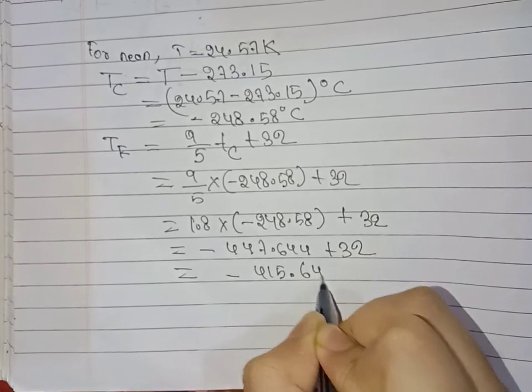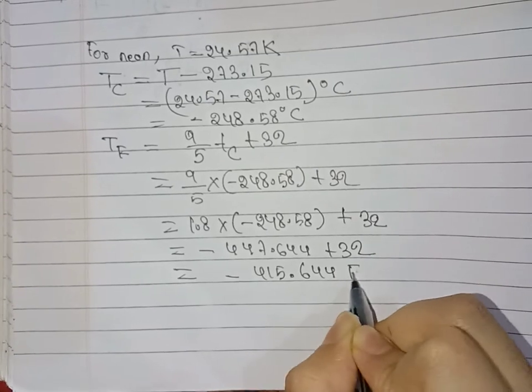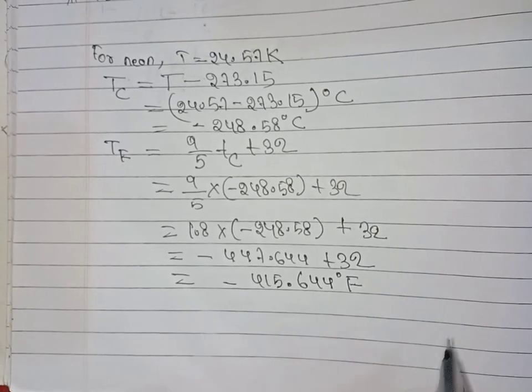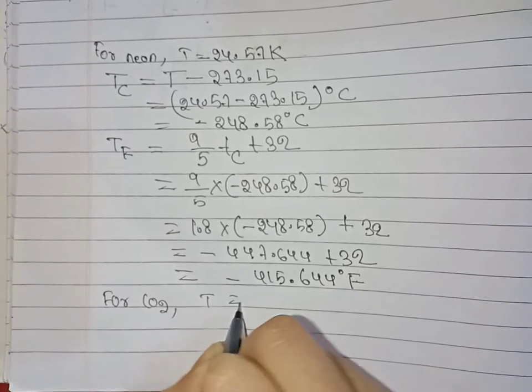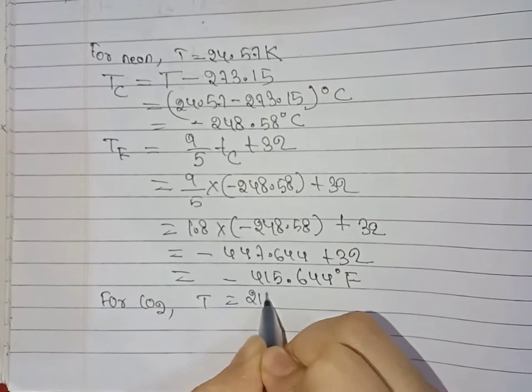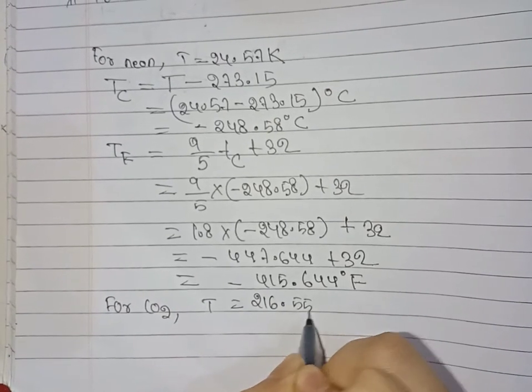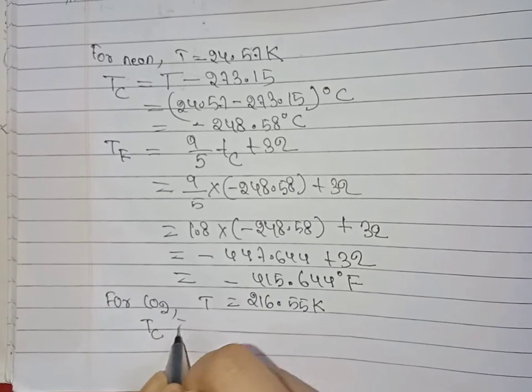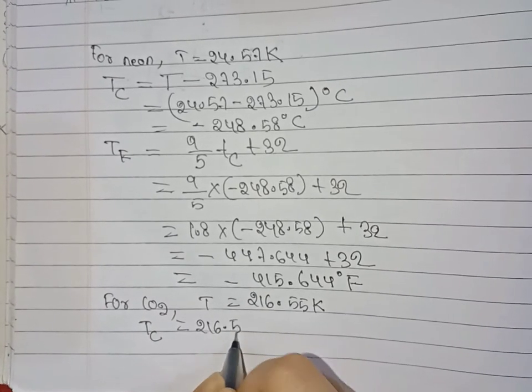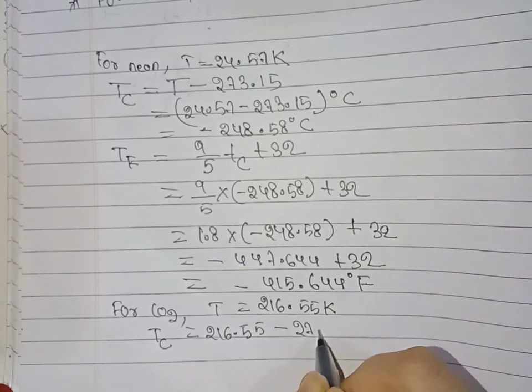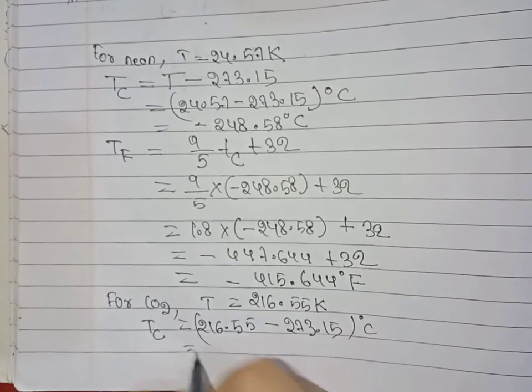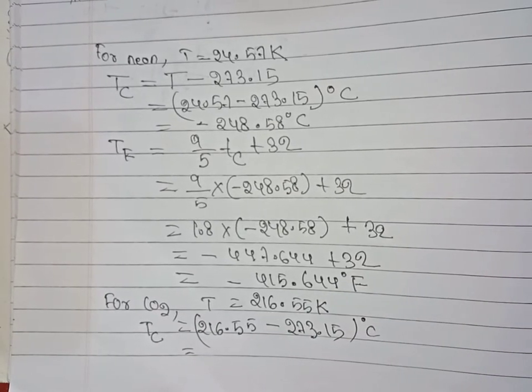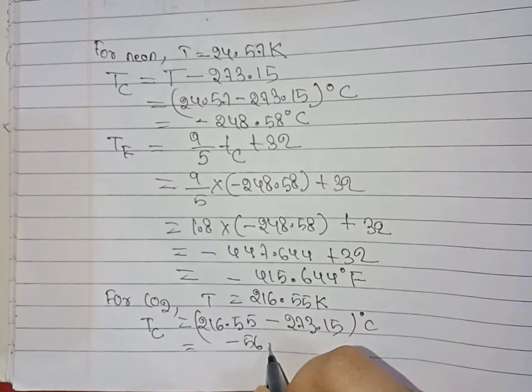Now for carbon dioxide, the temperature is 216.55 Kelvin. Using the formula T_C = 216.55 minus 273.15 degrees C, we get minus 56.6 degrees C.